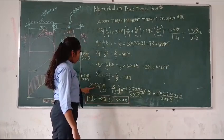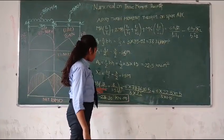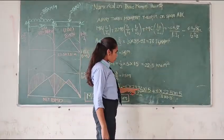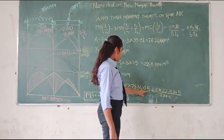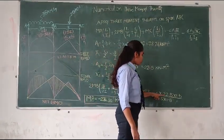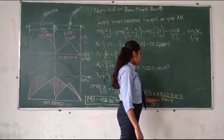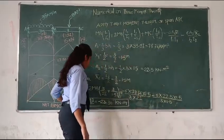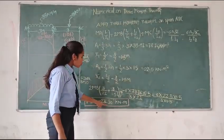2 into MB into 3 by 2I plus 3 by I equals minus 6 into 78.74 into 1.5 divided by 3 into 2I minus 6 into 22.5 into 1.5 divided by 3 into I. Then we get an answer of MB is minus 22.30 kNm.